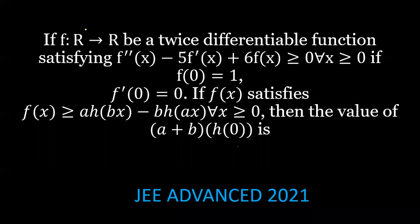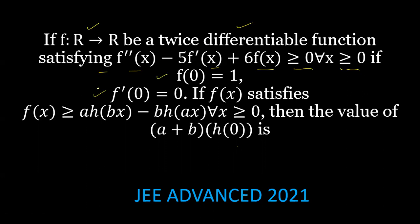In this problem, f is a function from R to R, a twice differentiable function satisfying f''(x) minus 5 times f'(x) plus 6 f(x) is greater than or equal to zero for all x greater than or equal to zero, with f(0) equal to 1 and f'(0) equal to 0.